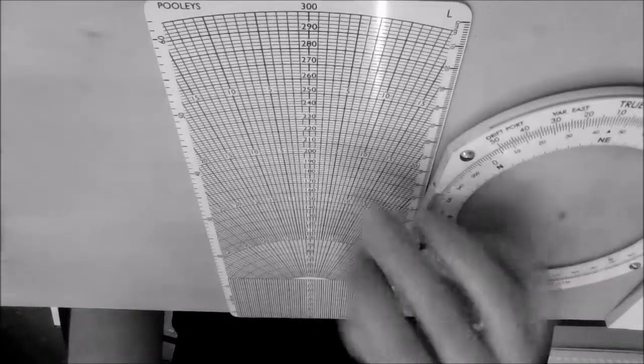So the first thing we want to do, obviously our TAS is 210 which fits on the low speed side of our CRP5 slider, so we'll insert that into our CRP5.